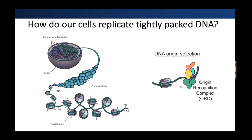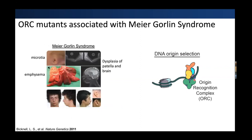ORC is essential — it marks sites along DNA to recruit factors that will open up the DNA and allow for replication at these sites, efficiently organizing this dynamic and complicated process. Examples of its importance: mutations in this complex are associated with developmental disorders such as Meier-Gorlin syndrome, with phenotypes including microtia, dysplasia of many organs. So ORC is really essential for organizing replication so cells can replicate and divide.